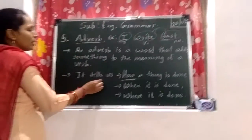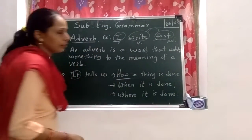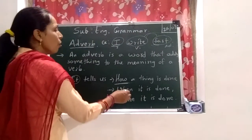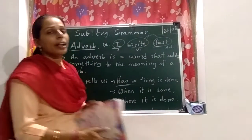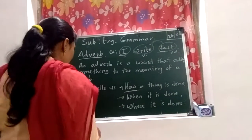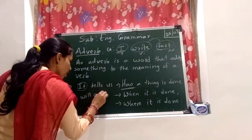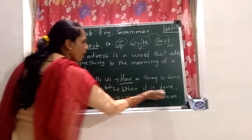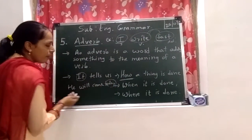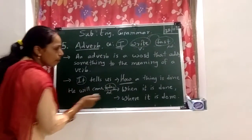Now, an adverb tells us how a thing is done — like 'I write fast.' It also tells us when it is done. For example: he will come today. When will he come? Today. So 'today' is an adverb of time.